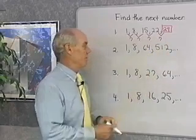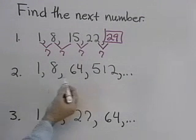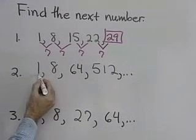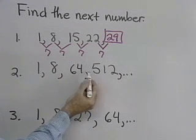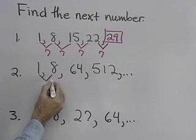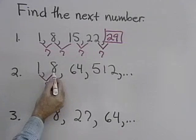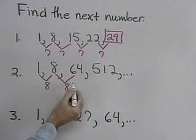Here's our next one: 1, 8, 64, 512. If I look at this, I can't add the same number and progress down this sequence. Let's look at multiplication. 8 times 1 gives me 8. So if I multiply here by 8, I get this term. 8 times 8 gives me 64. So again, I multiply by 8.